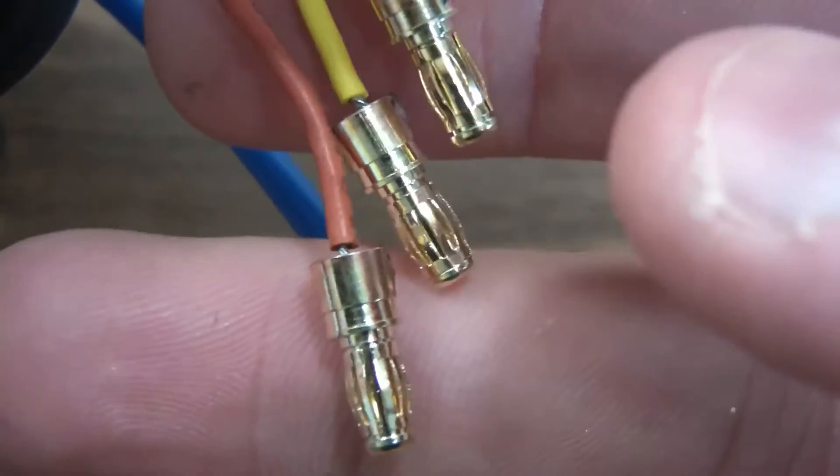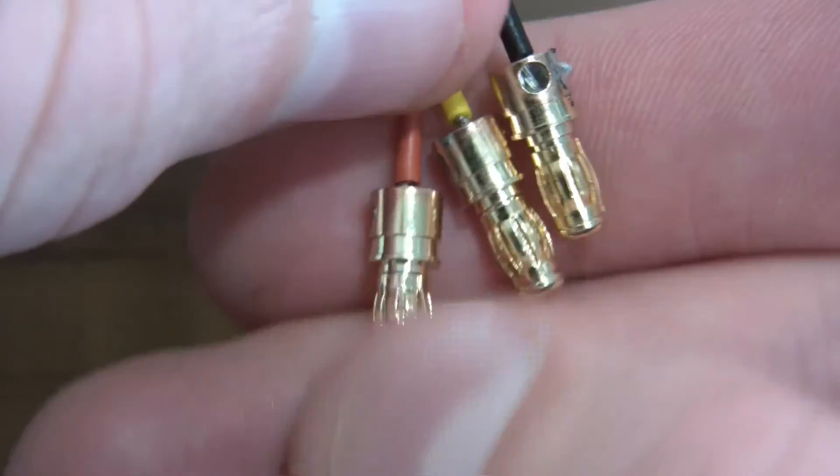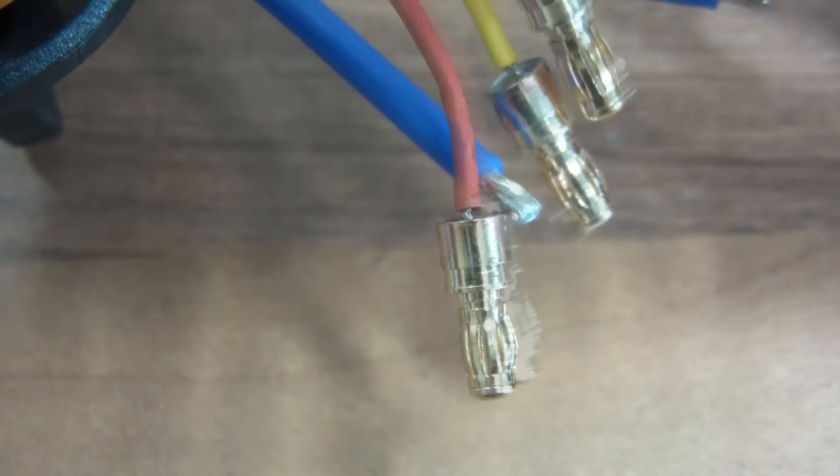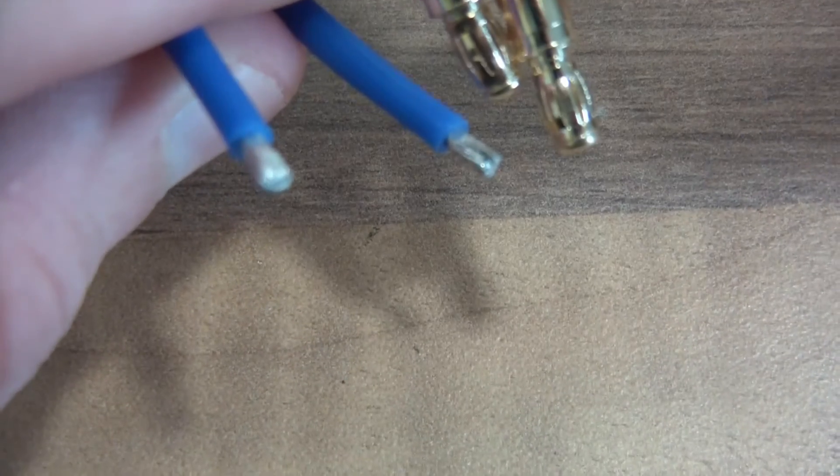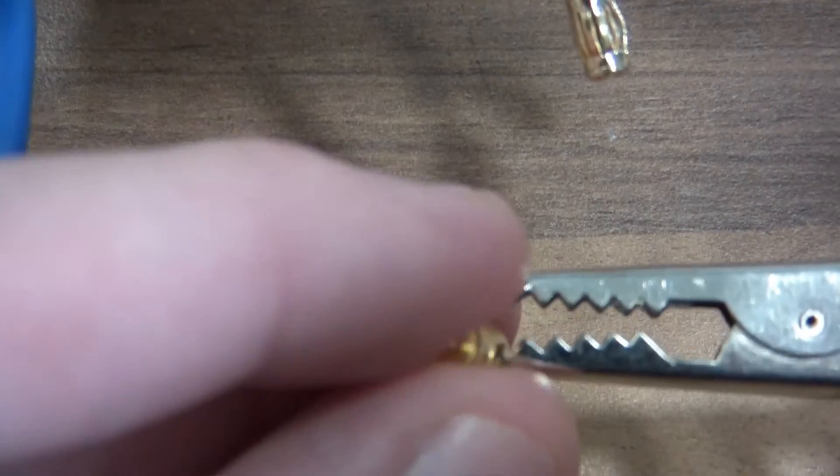The next thing I need to do is put some heat shrink on them, but I think I'll do that last. So what I'll do now is connect the other halves, which are the ESC parts. The process is more or less the same - in fact, it is the same. So I'll get the cup to hold the connector.